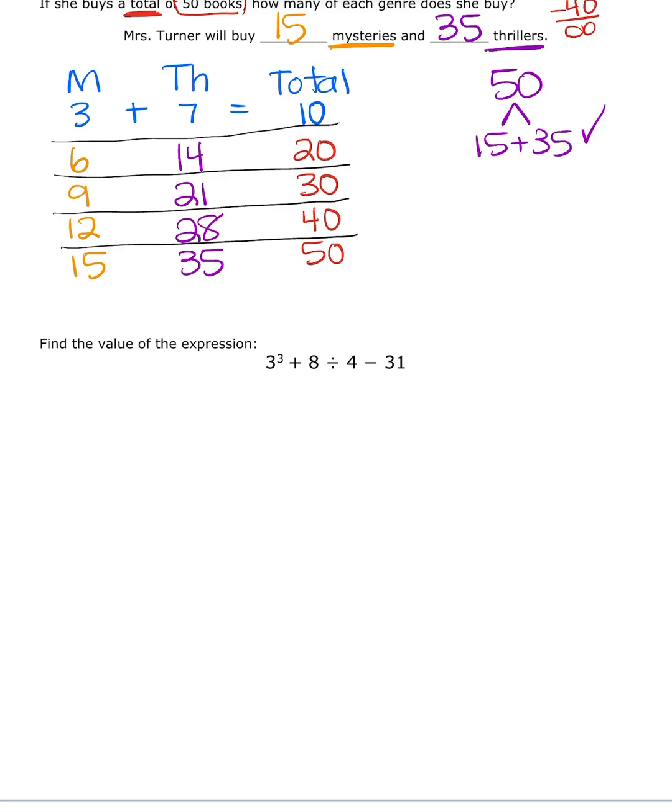All right. Last question. It says, find the value of the expression. 3 to the third power plus 8 divided by 4 minus 31. So, I see lots of operations. I have some exponents, some addition, some division, some subtraction. Because I have all of these operations, I know I need a Gemma tower, an order of operations tower. So, I'm going to come over here to the side. And I'm going to draw myself a Gemma tower. We know Gemma is groupings, exponents, multiplicative, additive. I know that for multiplicative, I might need integer man if there's negatives. And for additive, I might need a positive negative table for negatives with adding and subtracting. So, now, I go through my Gemma tower. I work my way down.